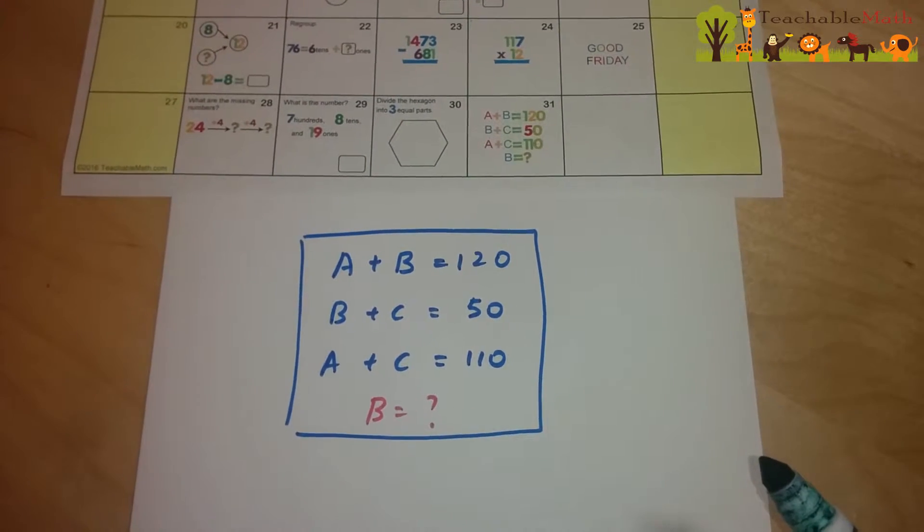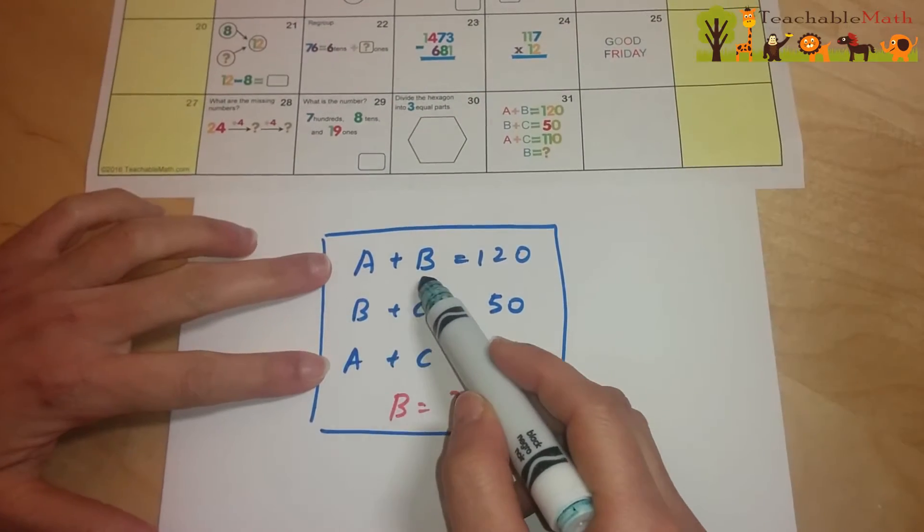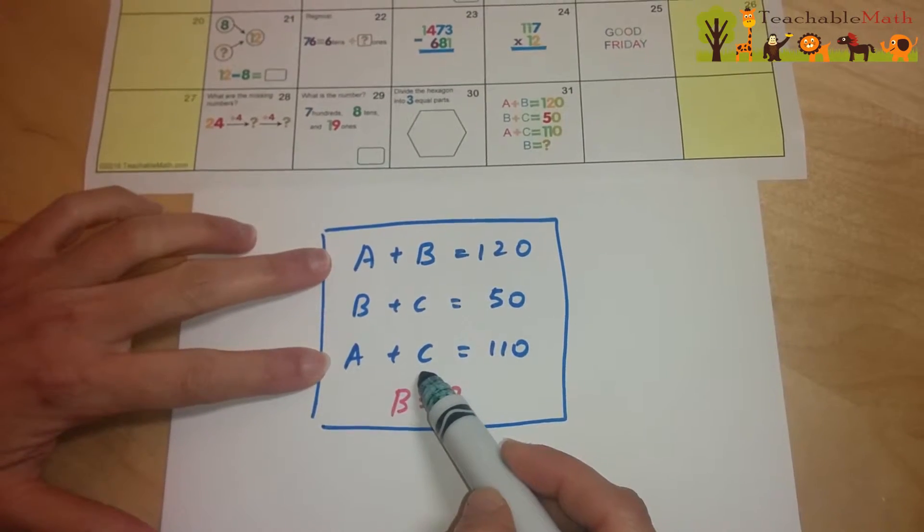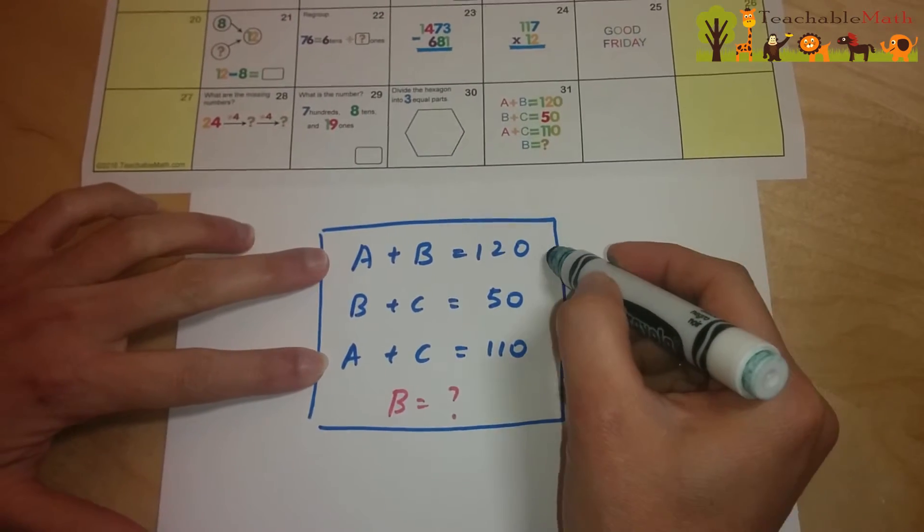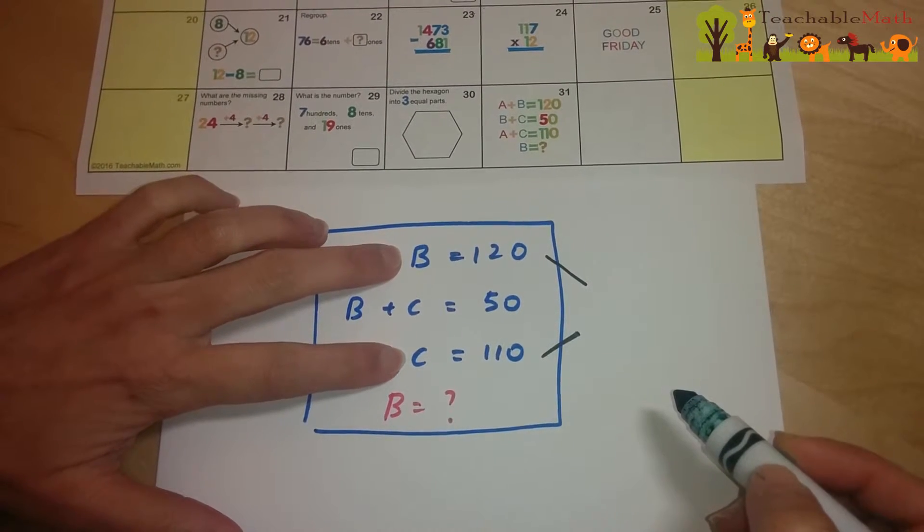Let's start by comparing the values of B and C by looking at these two equations. A plus B is 120, the same A plus C is 110. From these two, we can deduce that B has to be 10 more than C.